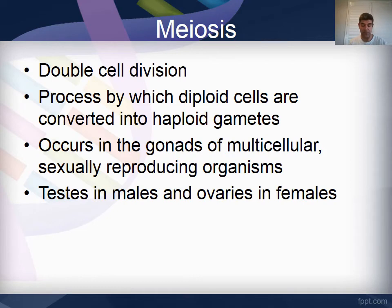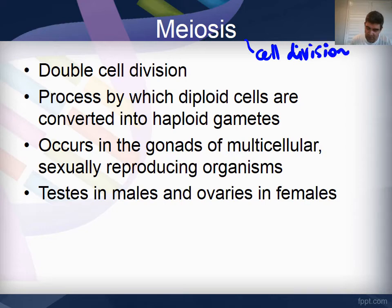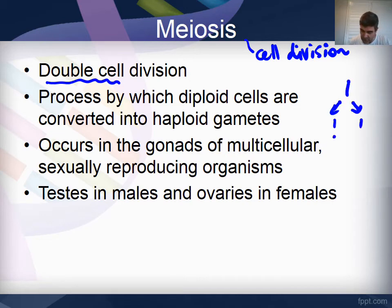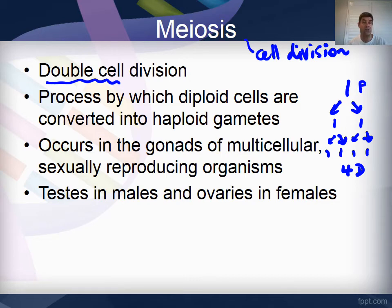The exception I just mentioned — the gametes or sex cells — are produced by a different process of cell division called meiosis. Meiosis is a double cell division: one cell splits into two cells, but then each of those two splits into another two, so we end up with four daughter cells for every one parent cell. Another result of this double division is a halving in the chromosome number.